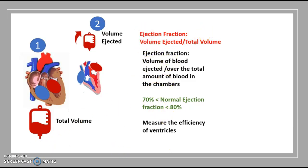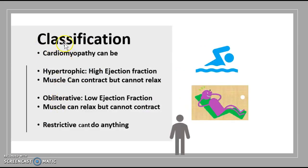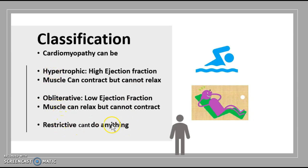There are three different classifications of hypertrophic cardiomyopathy. The first is hypertrophic: high ejection fraction, the muscle can contract but cannot relax, so it's not very good at absorbing blood. When it is obliterative, it has a low ejection fraction and the muscle can relax but cannot contract — the opposite of hypertrophic. The last is restrictive, where the muscle is not very good at either contracting or relaxing — neither obliterative nor hypertrophic, nor normal.